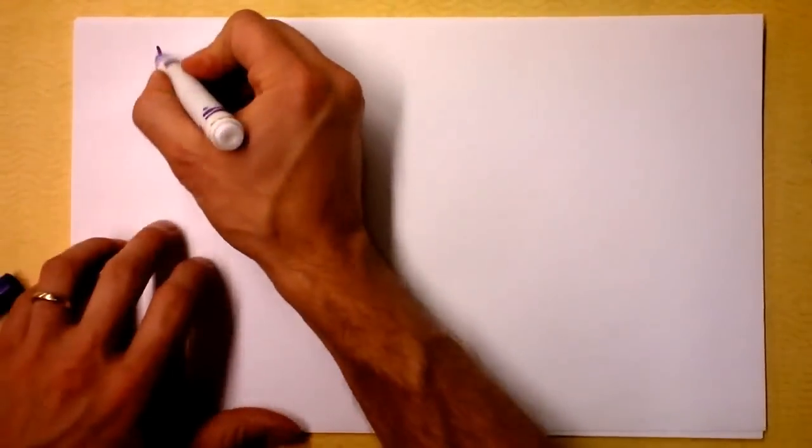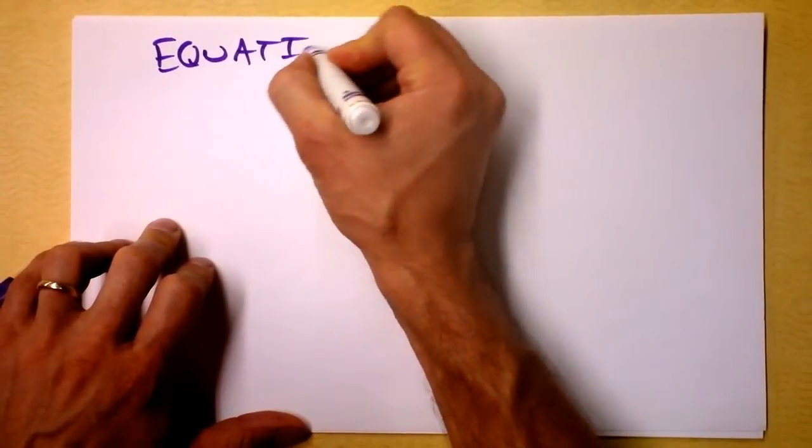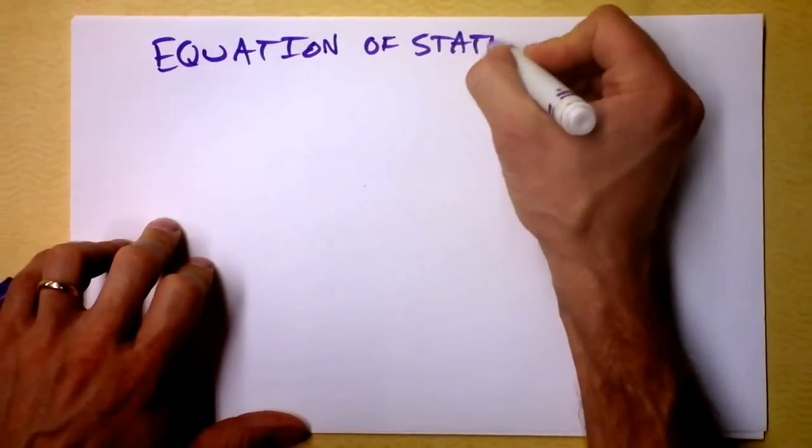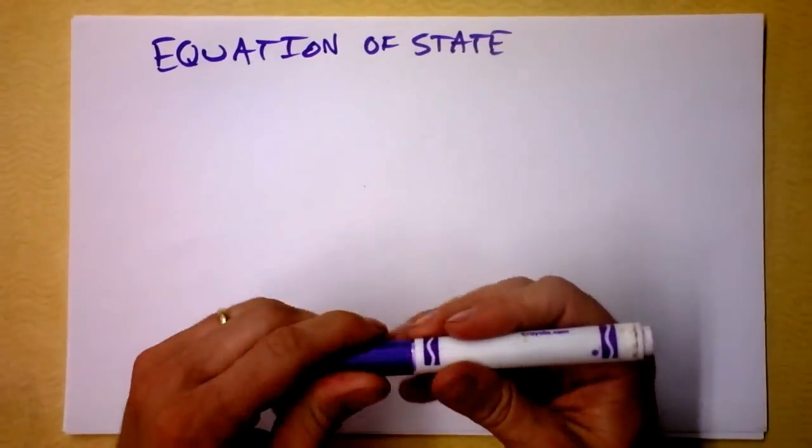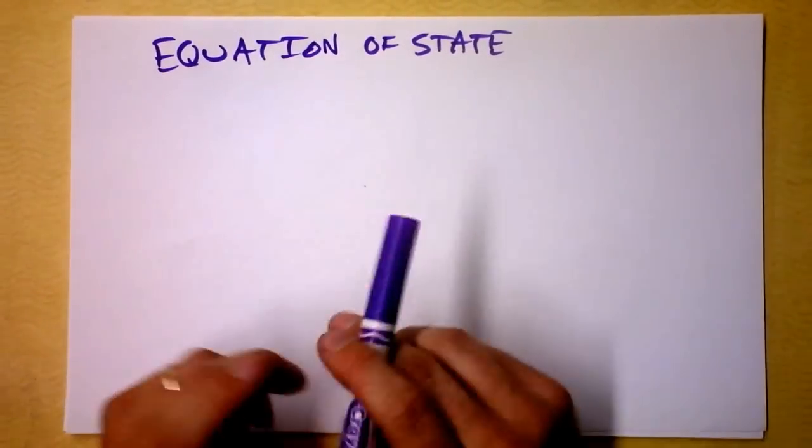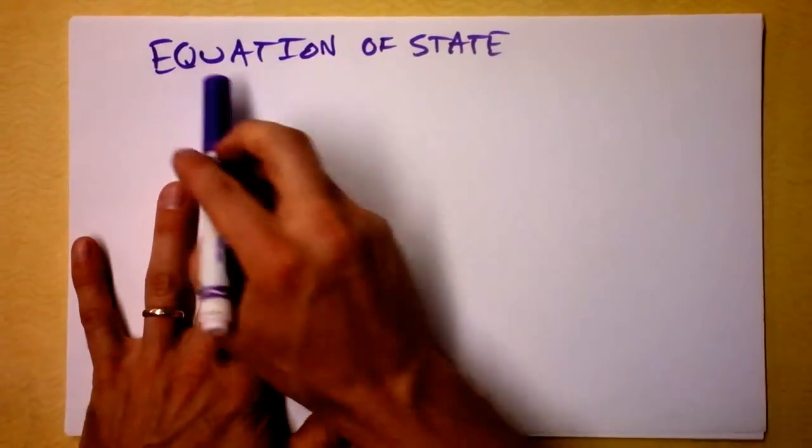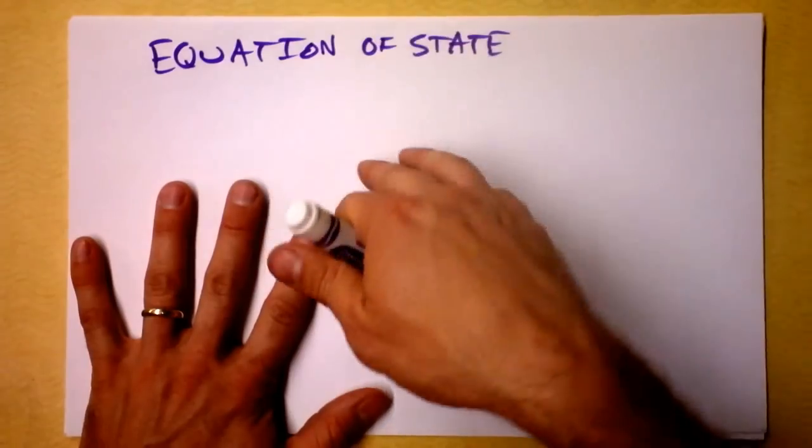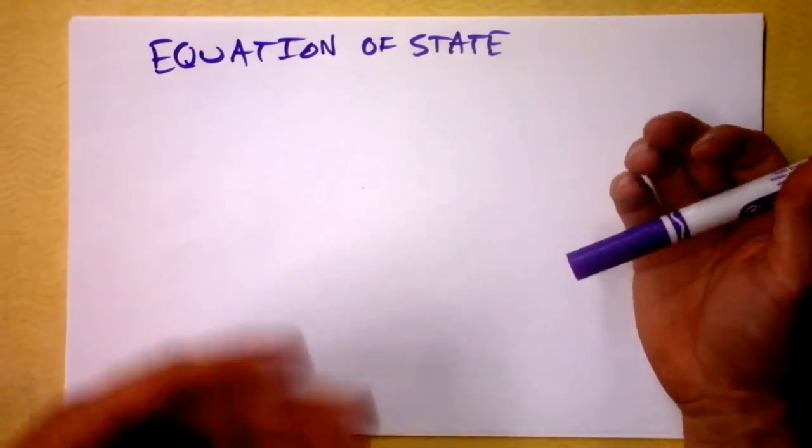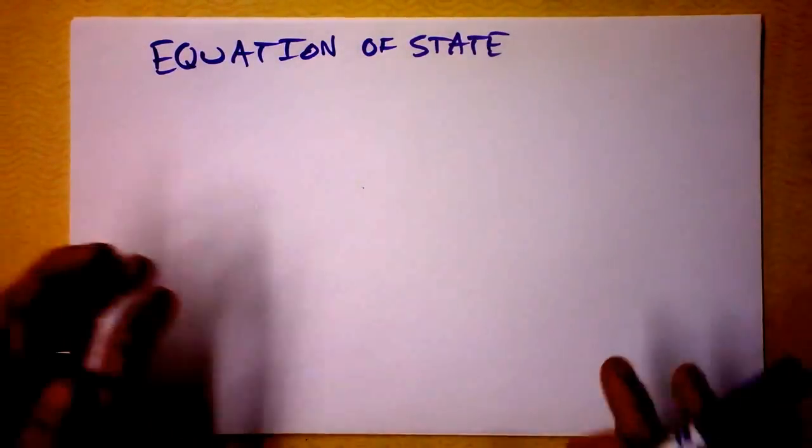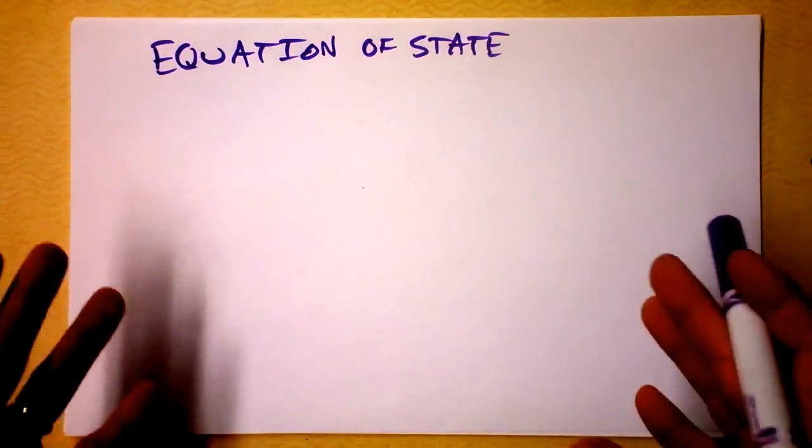So let's start this idea of equation of state, and I want to talk about what that means. It's sort of like, you know, the president every once in a while talks to you about the state of the union. This is an equation of the state of the system. So it's sort of like saying, hey, what's going on, system? And it talks about how the different parts of the system might interact.